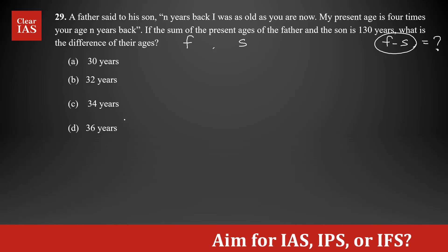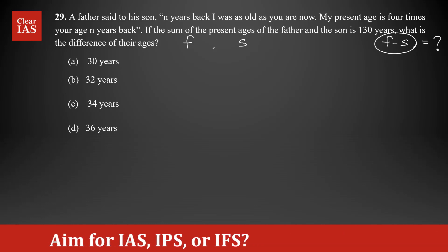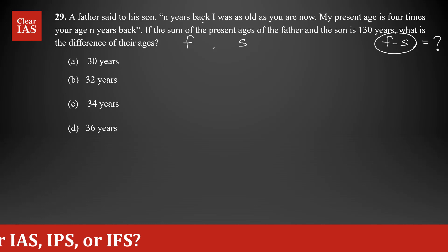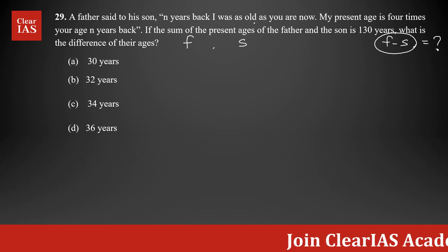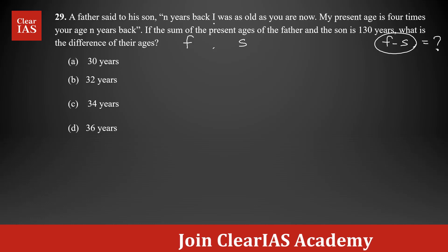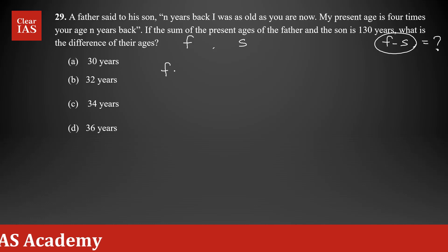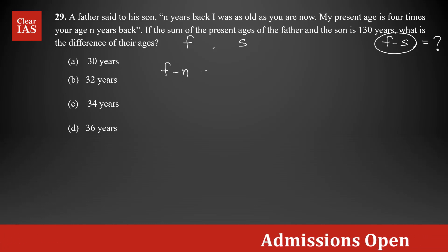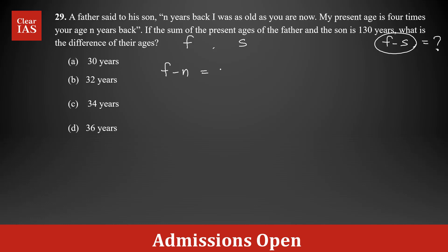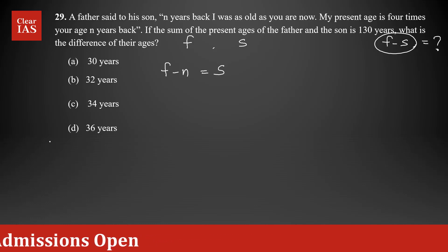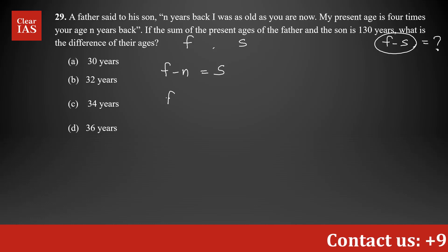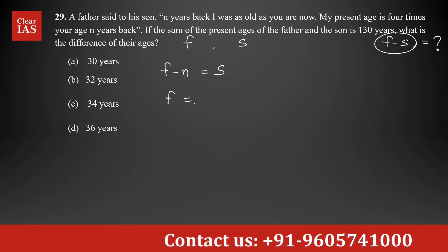Now let's form equations from the word problem. 'n years back, I was as old as you are now' — the father's age n years back is f minus n, and that equals the son's present age s. So the first equation is: f minus n equals s.